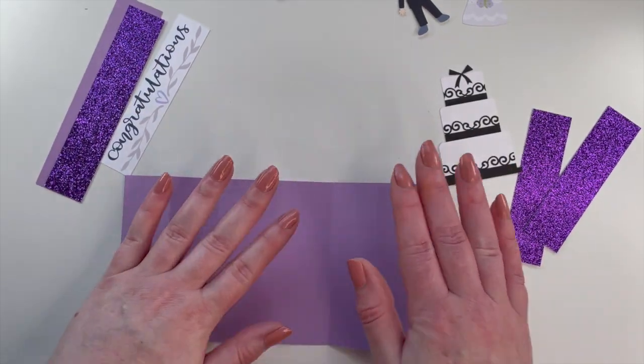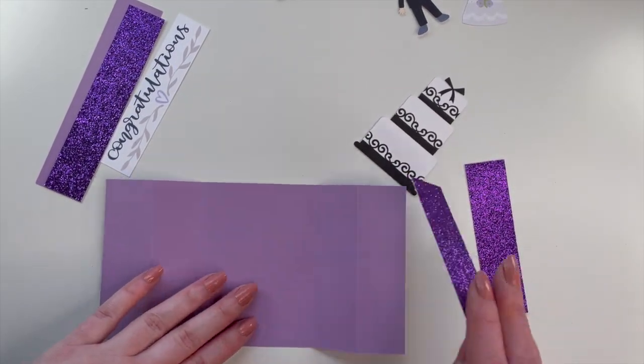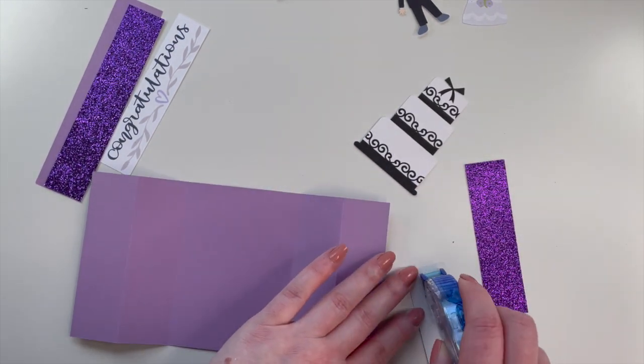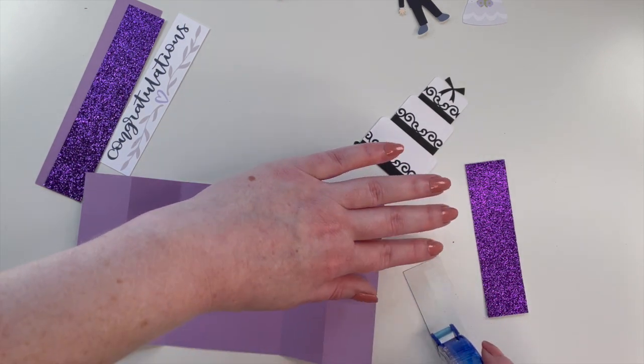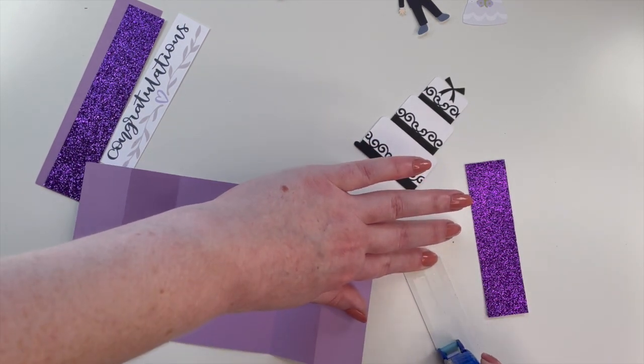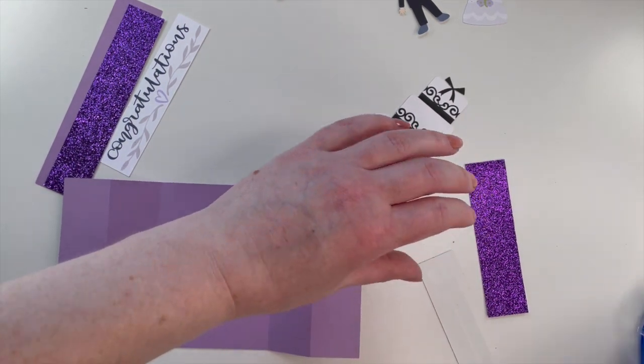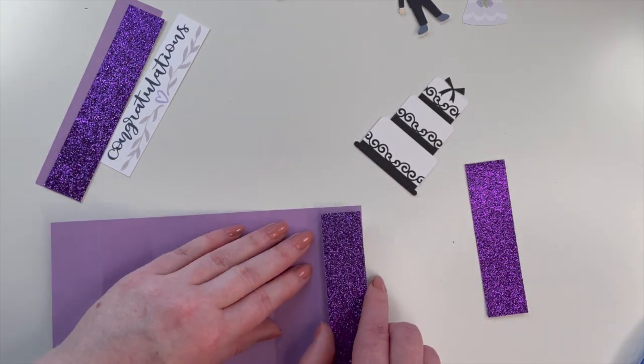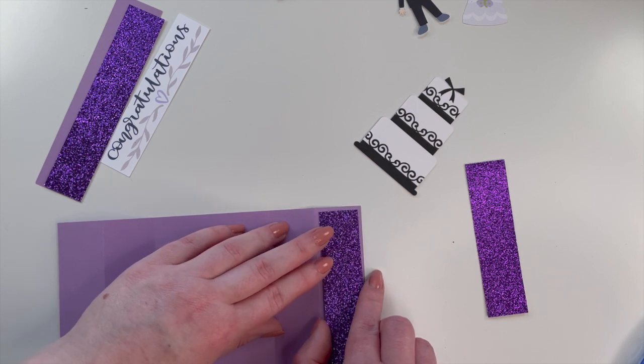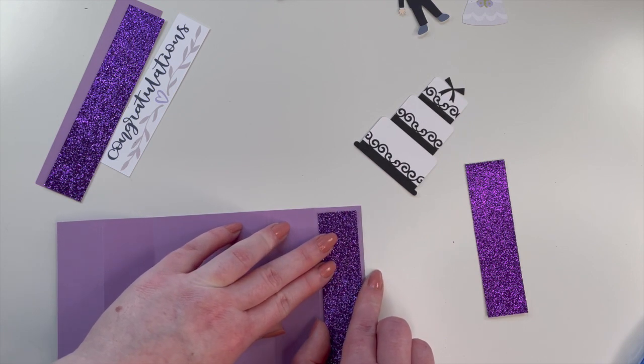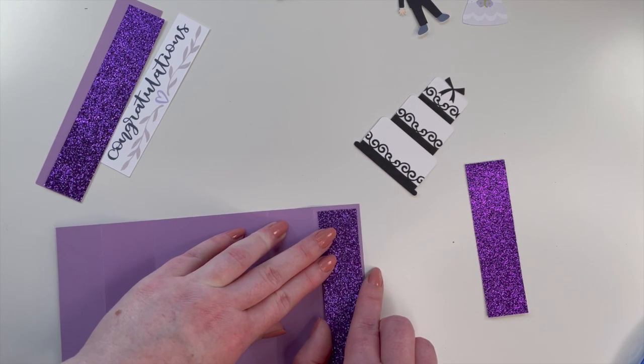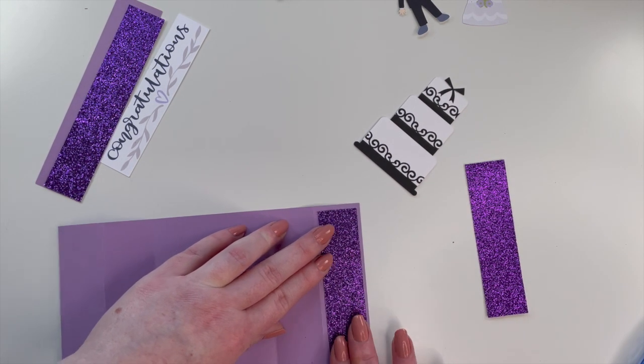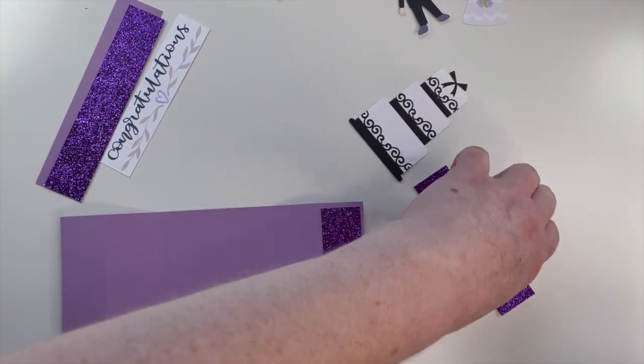I'm going to open it back up. We're going to attach our pieces there. I am going to use my regular tape for that. This is easier to do once you have the score lines folded. Here's one, let's get the other one done.